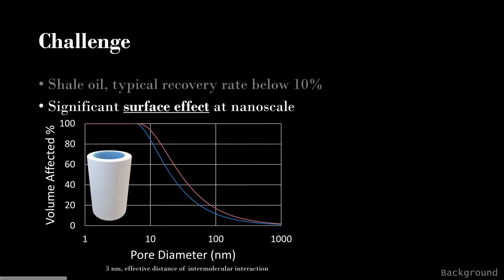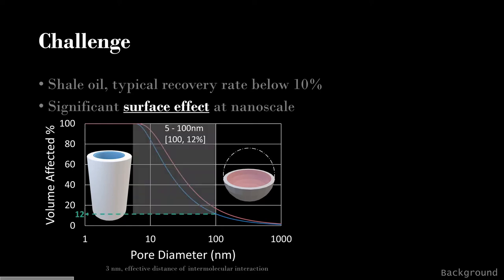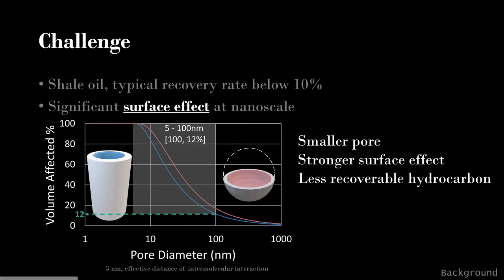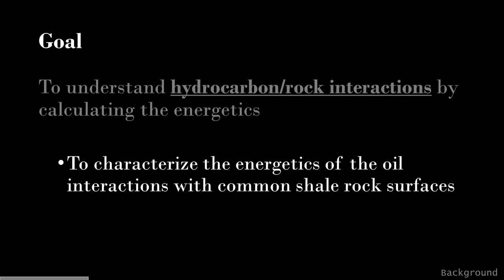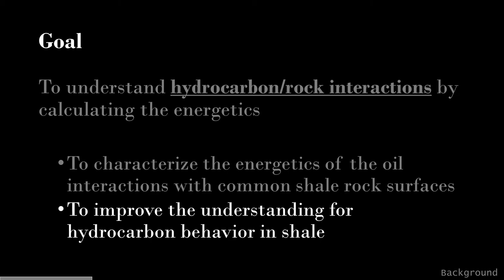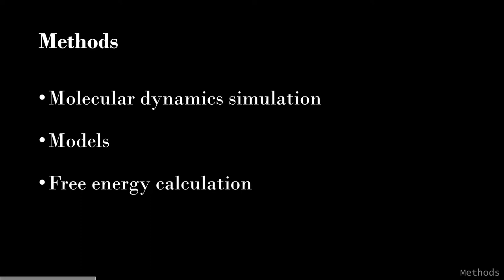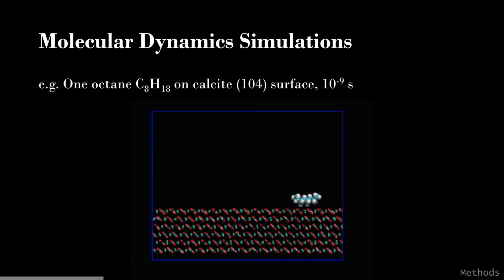Assuming the effective distance for surface interaction is 3 nm, for both cylindrical and spherical pore structures, if the diameter is less than 100 nm, at least 12% of the confined fluid will be affected by the surface effect. Small pores have stronger surface effects, therefore less hydrocarbon can be recovered. The goal of this study is to understand the mechanism behind the oil-rock interaction by calculating the interaction energy, leading to a better understanding of the unconventional behavior of hydrocarbon in shale reservoirs. In the methodology section, I will introduce the concepts of molecular dynamics simulation, models, and free energy calculation, with an example of one oil molecule interacting with the calcite surface.